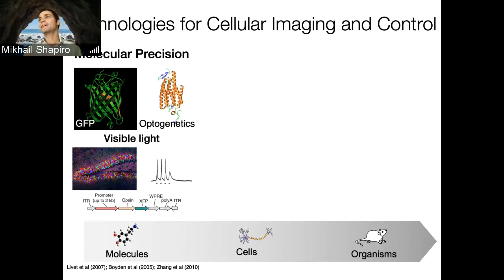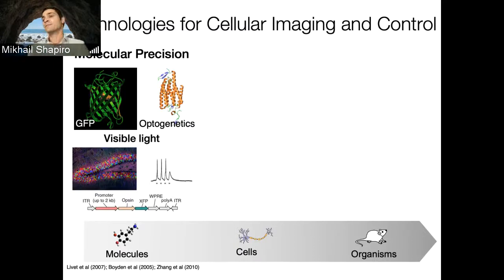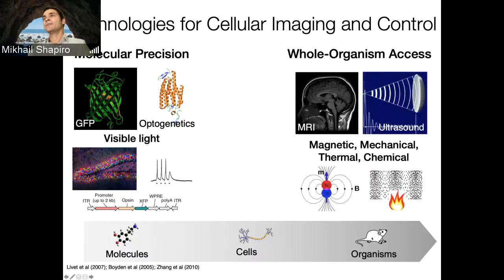The reason this is very challenging is that the techniques currently available that are really good at imaging and controlling cells — things like fluorescent proteins or optogenetics — are based on light. They derive a lot of their power from the fact that they're genetically encodable, so we have very good ways to plug them intimately into what's happening inside cells. But light doesn't penetrate very deeply into tissues — it's really hard to beat a limit of about a millimeter scale for penetration before photons get scattered.